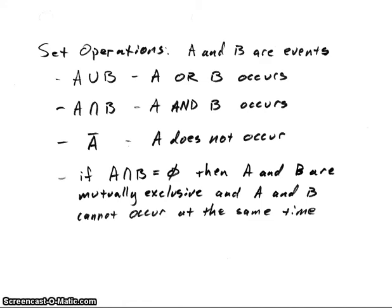A union B is A or B occurs. So the event A or B is the outcome, or the outcome could be either A or B. An intersection, we know we use the term and for that. And that means that our outcome will be A and B. So when the outcome occurs, it will be both A and B.